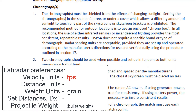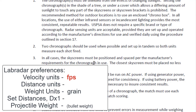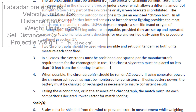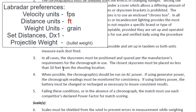We're going to look at section 3. Here it's referring to a typical chronograph. The last sentence says the closest skyscreen must be placed no less than 10 feet from the shooting location. So this tells us that the Lab Radar preference distance units needs to be in feet — not yards, not meters, but in feet.